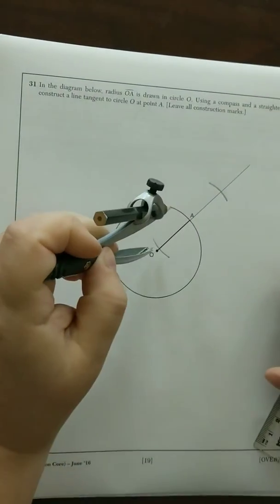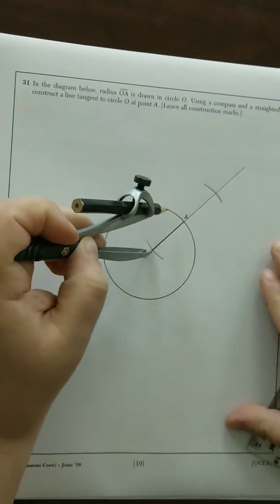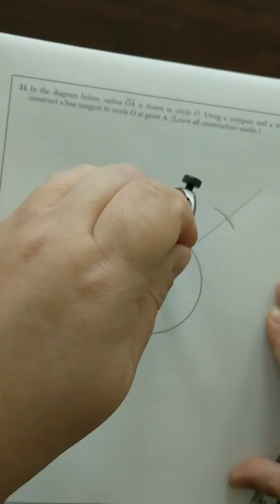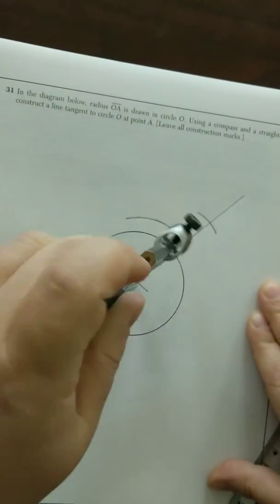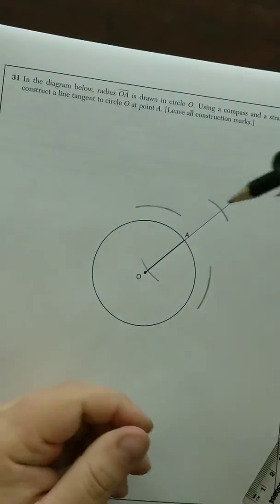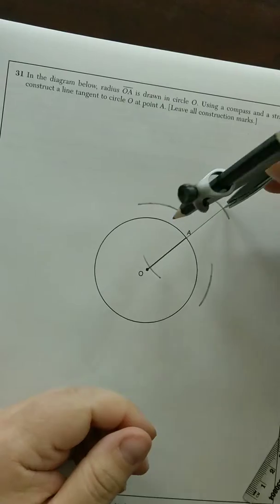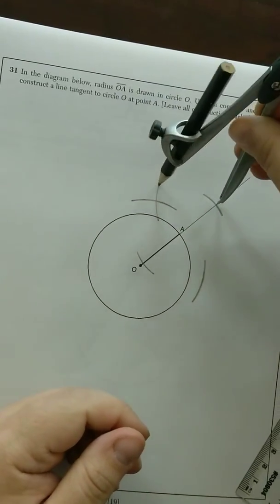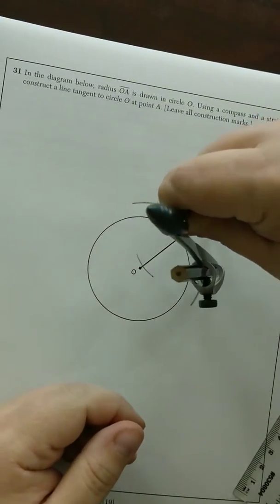Take your compass from each side and extend it a little outside the circle. Do an arc up top from that one, an arc on the bottom from that one. Same thing from the other arc you created. You're creating a perpendicular bisector outside the circle.